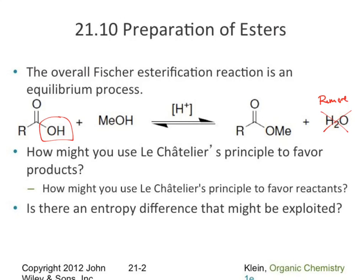We could change the leaving group to a better one — go back to an acyl chloride or acetic anhydride, and both would do ester formation very rapidly. But in doing that, we're no longer doing a Fischer esterification. Changing the leaving group definitely helps, but you're no longer using the carboxylic acid. We're going to try to maintain the Fischer esterification.